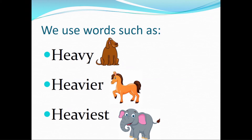The words we use when describing mass or weight include: heavy, heavier, and heaviest. The dog is heavy, the horse is heavier, and the elephant is the heaviest.